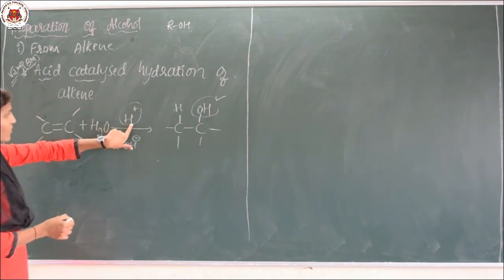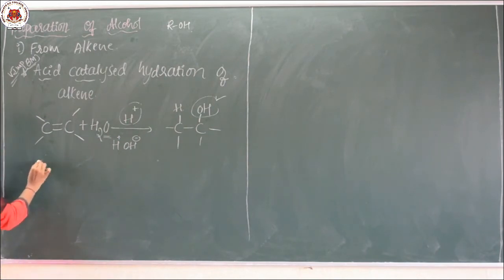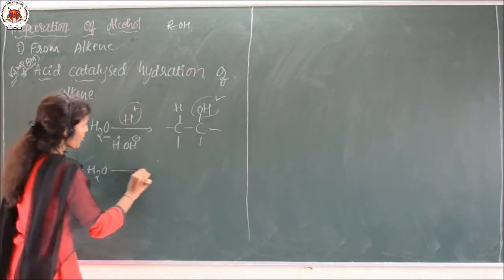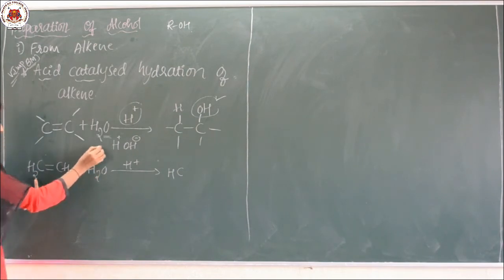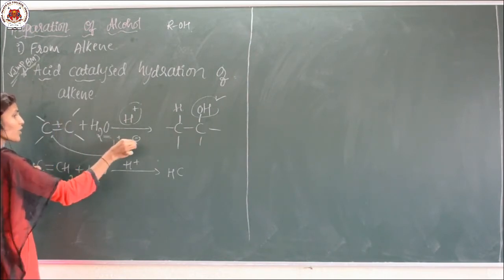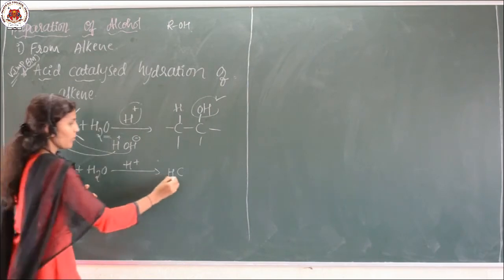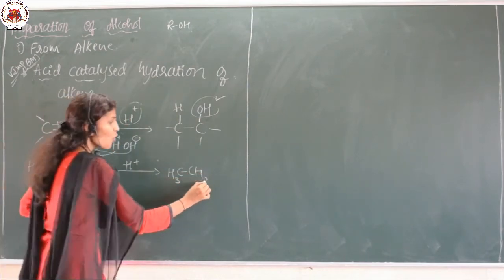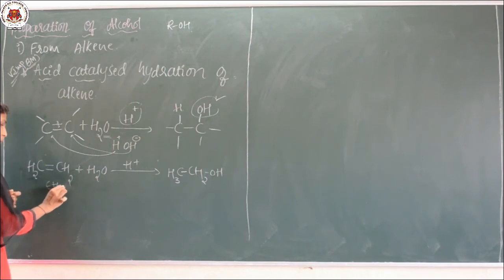We are using acid as catalyst and hydration means we are using water. For example, ethene when it undergoes acid catalyzed hydration — one hydrogen is added here, the double bond breaks, and OH is added. When hydrogen is added here this double bond breaks, it becomes CH₃, the double bond is reduced to a single bond, it becomes CH₂, and the OH group remains. So ethanol is formed from ethene.